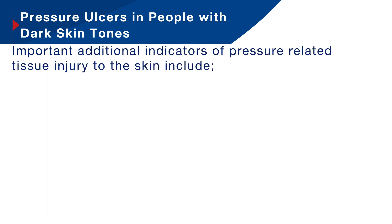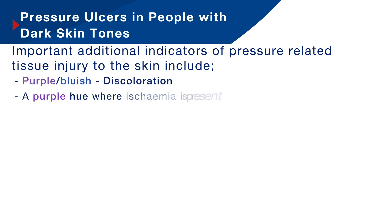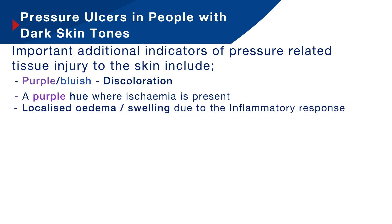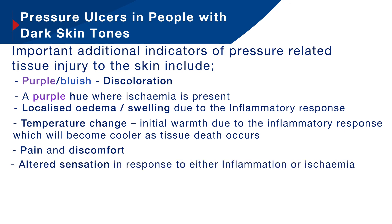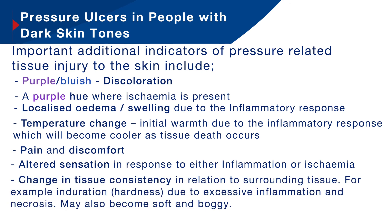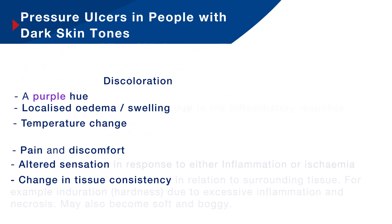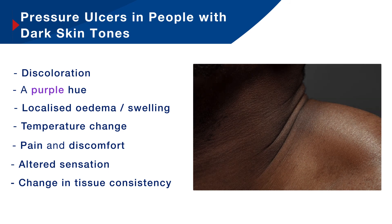To reduce the risk of erythema and category one pressure ulcers developing into full thickness wounds in patients with dark skin tones, it is essential for clinical staff and carers to recognise other signs and symptoms as early indicators of pressure-related tissue damage. These include purplish or bluish discolouration, a purple hue where ischaemia is present, localised oedema or swelling due to the inflammatory response, and temperature changes — initial warmth due to inflammation which will become cooler as tissue death occurs. Also pain and discomfort, altered sensation in response to inflammation or ischaemia, and changes in tissue consistency such as induration due to excessive inflammation and necrosis, or the skin becoming soft and boggy. Whilst these additional signs and symptoms are applicable to all skin tones, they can be particularly useful when caring for patients with dark skin tones.